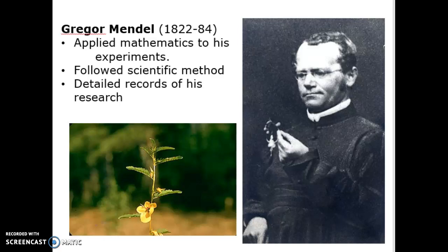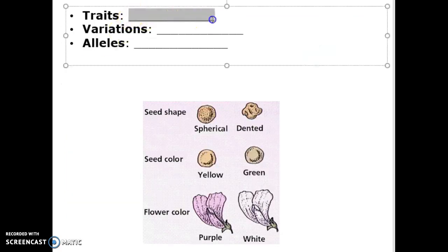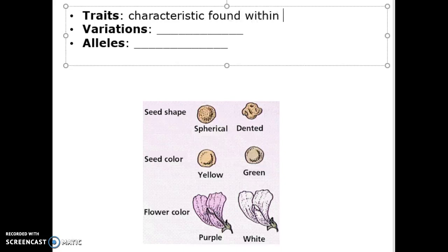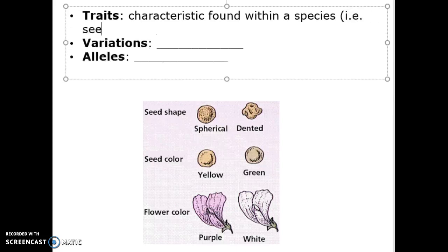So some key terminology I want you guys to make sure you are comfortable with. Traits or trait. A trait is a characteristic found within a species. Let me give you an example here: seed shape. All the seeds in the pea species, the pea plant species, will have a shape.